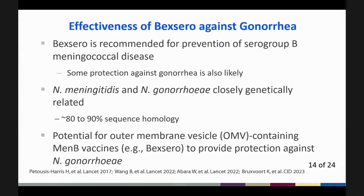Bexero is recommended for the prevention of serogroup B meningococcal disease, and deliberations regarding the adolescent meningococcal vaccine schedule will primarily consider meningococcal disease prevention. Bexero also appears to provide some protection against gonorrhea. Neisseria meningitidis and Neisseria gonorrhoeae are genetically closely related, sharing about 80 to 90% sequence homology. As such, it is plausible for outer membrane vesicle meningitis B vaccines such as Bexero to provide cross-protection against gonorrhea.